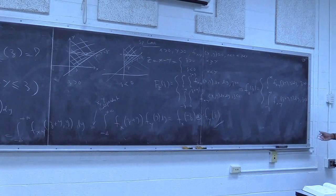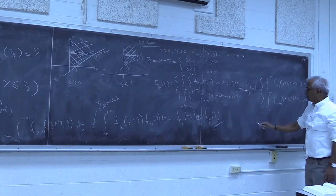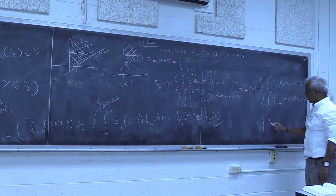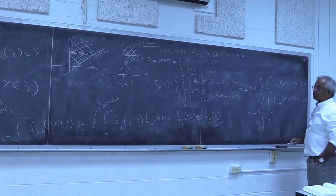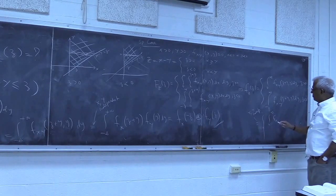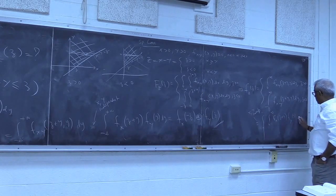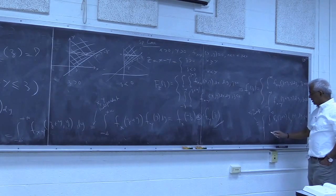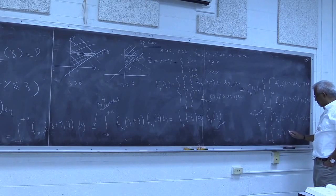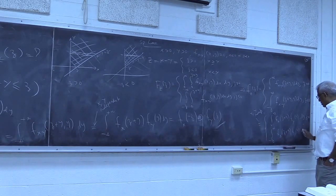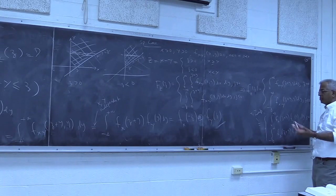Further, if x and y are independent, these simplify as products. For z positive: the integral from 0 to infinity of f_X(z+y) times f_Y(y) dy. For z negative: the integral from minus z to infinity of f_X(z+y) times f_Y(y) dy. You can then substitute the actual values for specific problems and simplify.